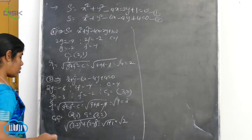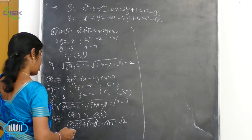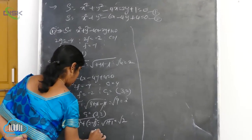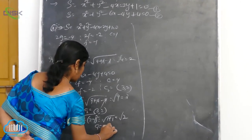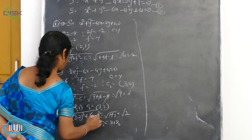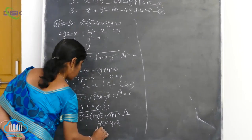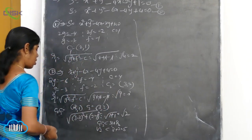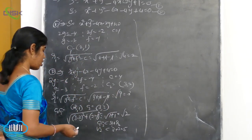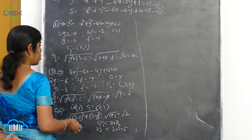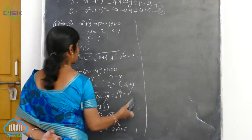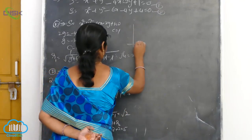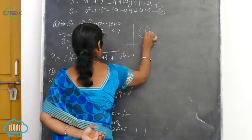Now we will sum up. C1C2 is less than R1 plus R2, so the 2 circles are intersecting each other. They are intersecting.